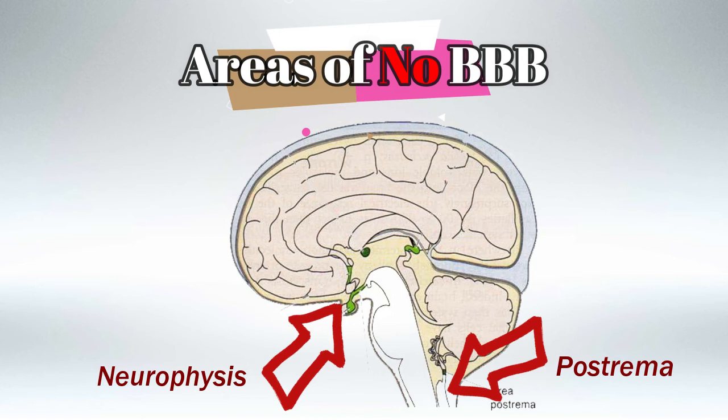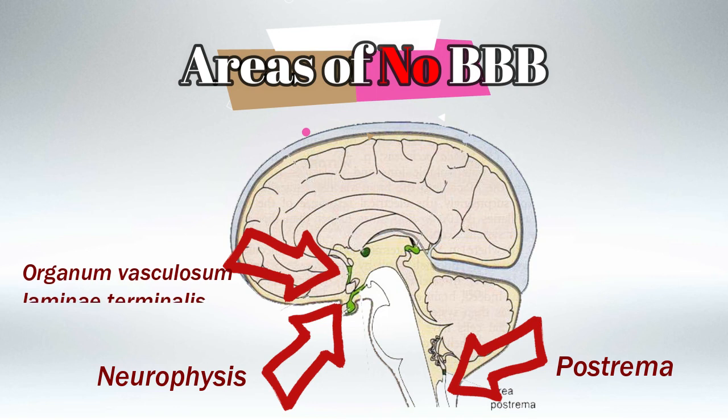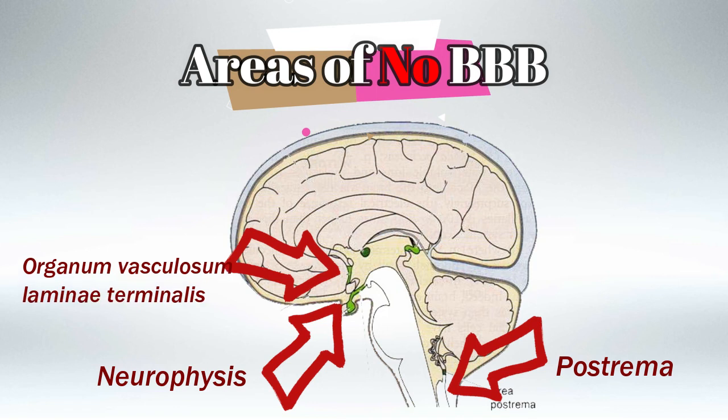The second area is the neurohypophysis, in the posterior pituitary gland specifically, where ADH and oxytocin are released into the blood. The third is the Organum Vasculosum Lamina Terminalis (OVLT), which is right next to the pituitary gland and senses blood osmolarity.